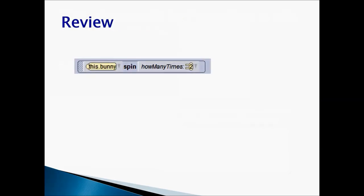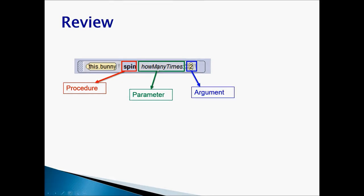Let's do a quick review of what we have learned today. Let's take a look at the statement, this bunny spin how many times equals to 2. Now when we talk about this instruction, spin, what is spin? Spin is a procedure. What is how many times? How many times is the parameter. Remember the parameter is like a container where it's holding some value. And 2 is the value argument. So how many times is holding value 2.